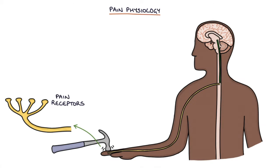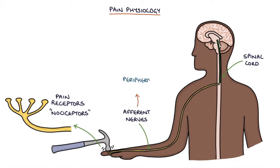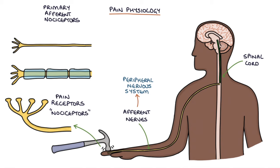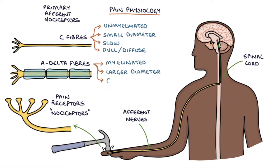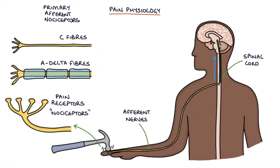At the most basic level, pain receptors, which can be called nociceptors, at the ends of nerves detect damage or potential damage to the tissues. Nerve signals are transmitted along the afferent nerves to the spinal cord. Two groups of nerve fibers transmit pain: C fibers, which are unmyelinated and have a small diameter, transmit signals slowly and produce dull and diffuse pain sensations; and A-delta fibers, which are myelinated and have a larger diameter, transmit signals fast and produce sharp and localized pain sensations. The signal then travels up the spinal cord, mainly in the spinothalamic tract and the spinoreticular tract, to the brain where it's interpreted as pain, mainly in the thalamus and the cortex.